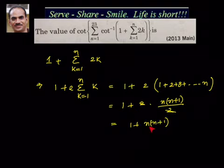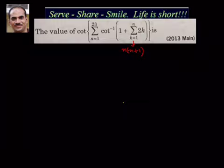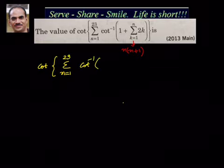Now let's take this value and substitute it back into the bracket. Substituting, we have cot of sigma n equal to 1 to 23 of cot inverse of 1 plus n(n+1).